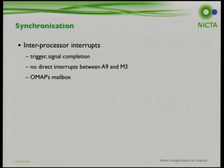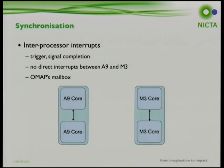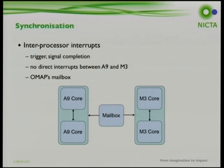Cores also need a way of signaling each other via inter-processor interrupts. Linux expects every core to be able to interrupt every other core, but in our system the A9s and M3s can't directly interrupt each other. TI provided a mailbox module for inter-subsystem communication that provides a single interrupt line to each subsystem, which we can then forward within the subsystem as needed.